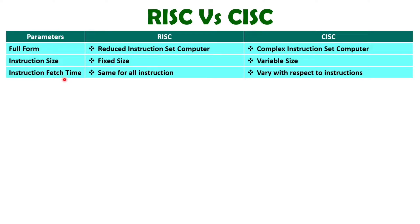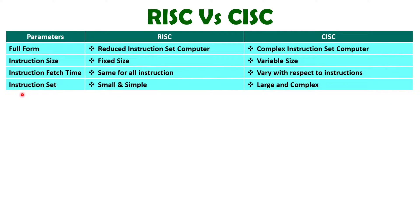When you talk about instruction fetch time, that will be the same for all the instructions in RISC architecture, because the instruction size is fixed. But with CISC architecture, you will be having variable instruction fetch time. The reason is there are varieties of operations that we perform with different instructions with CISC. So with complex instructions, instruction fetch time will be more and with simple instructions, instruction fetch time will be less. It will vary with respect to various instructions. When you talk about the instruction set, then with RISC, instruction set will be simple and small, but with CISC, instructions will be more and complex. From the name itself, we can understand it.